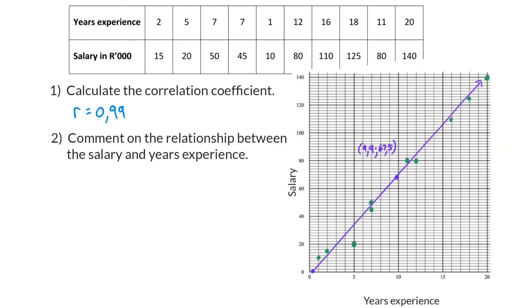Question 2: Comment on the relationship between the salary and years experience. Because we have a correlation coefficient of 0.99, we can say that here we have a very strong positive linear correlation. Because the correlation is so strong, we can use the regression line to make accurate predictions. It is an indication that this company values years of experience when determining a salary.